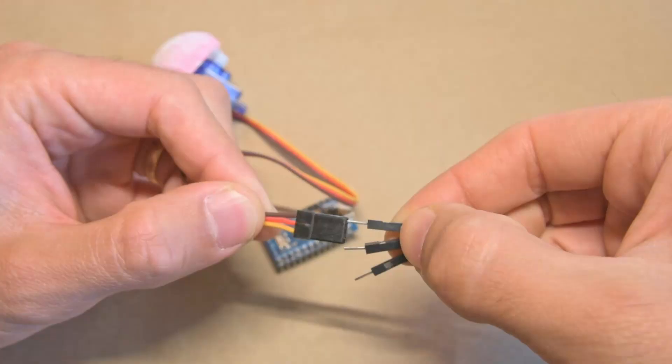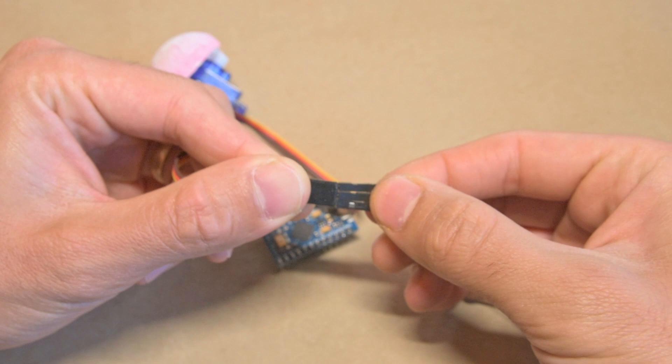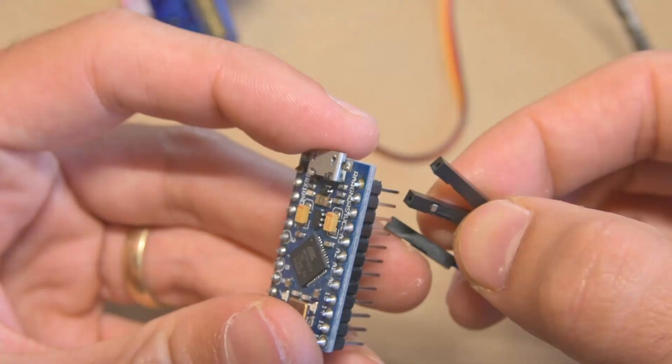Now that the pumpkin is ready, it's on to electronics. I connected the servo motor to an Arduino Pro Micro since it's small and will fit inside the pumpkin. Other Arduino boards would work fine too, but may not fit inside.